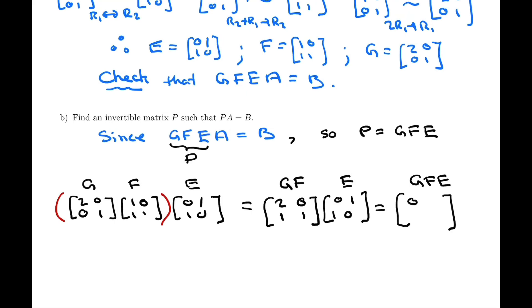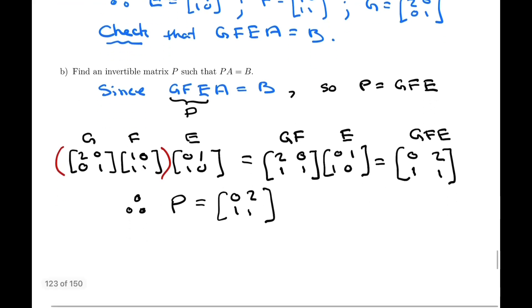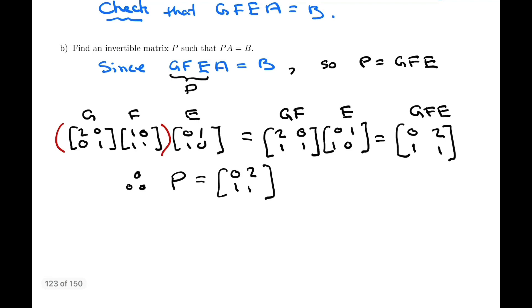And that'll be row 1, column 1, 0, 2, and then 1, 1. And that is the matrix GFE, or in other words, the matrix P. So P is 0, 2, 1, 1. And that's the invertible matrix we're looking for.